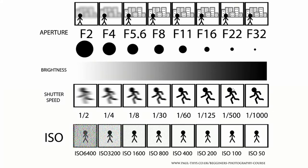Hello everybody, so today I'm going to walk you through the exposure chart — what it is and how to use it. Now this chart has all the technical information you need to get started with beginner photography. If you'll have a look, it's got four sections on it: aperture, brightness, shutter speed, and ISO.